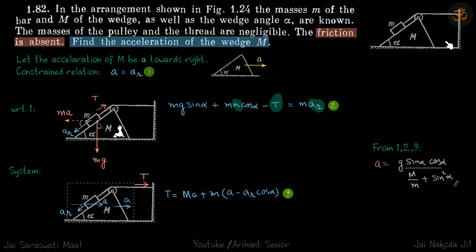We are given a pulley block and wedge system. All the surfaces are frictionless. We need to find the acceleration of bigger wedge M. One thing we can observe is because of the tension force as well as the normal reaction, the net force on M will be towards right, so the acceleration is going to be towards right.